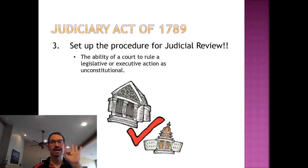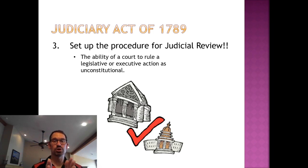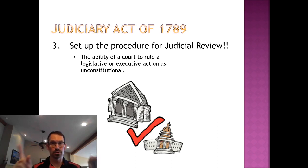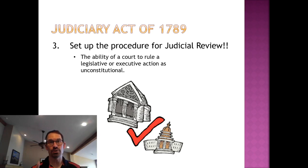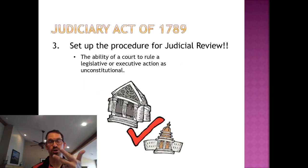Third thing the Judiciary Act of 1789 did: it set up the procedure for judicial review. The Judiciary Act of 1789 — a statute — gave all federal courts in this country the ability to use judicial review: the ability of a court to rule whether or not a legislative or executive act was constitutional or unconstitutional. This is their check and balance, but the procedure is set up by the Judiciary Act. It doesn't mean anything until a court interprets it.